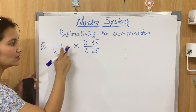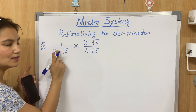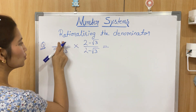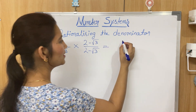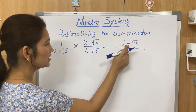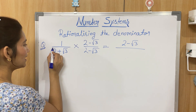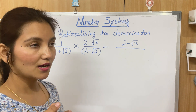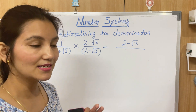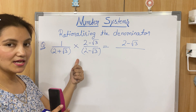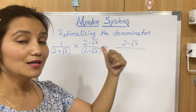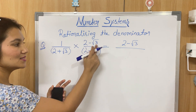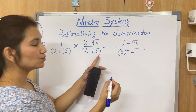If it is plus, we'll multiply by minus; if it is minus, we'll multiply by plus — whatever sign is there, you change it and multiply both denominator and numerator by it. So multiplying 1 by 2 − √3 gives 2 − √3 in the numerator. In the denominator, (2 + √3)(2 − √3) uses the identity (a + b)(a − b) = a² − b², so it becomes 2² − (√3)².